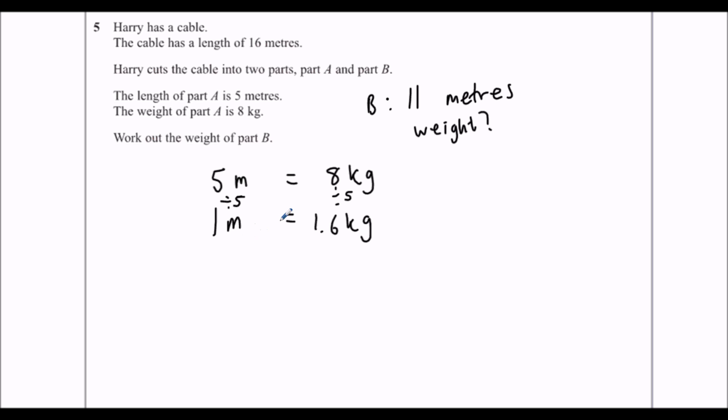So each meter is going to weigh 1.6 kilograms. Now we've got options of how we're going to get to 11. Because we've got a calculator, the easiest thing to do is probably just times 11. 1 times 11 makes 11.